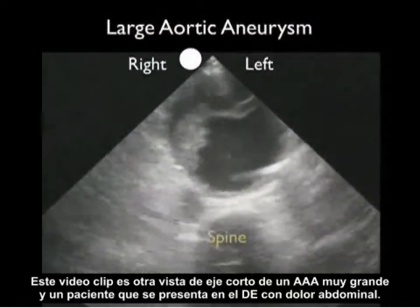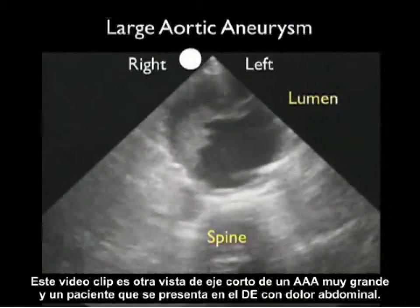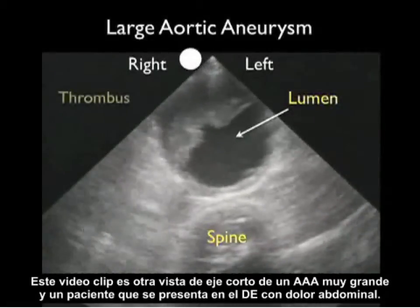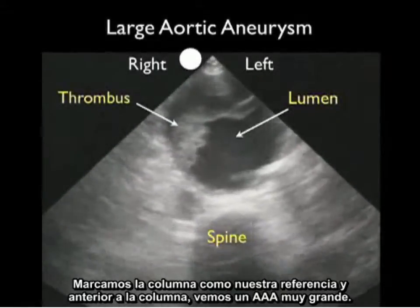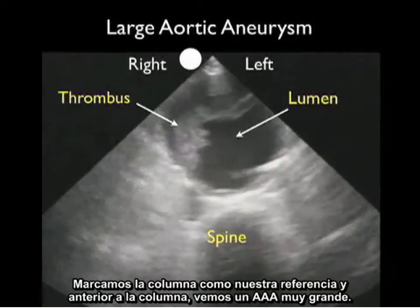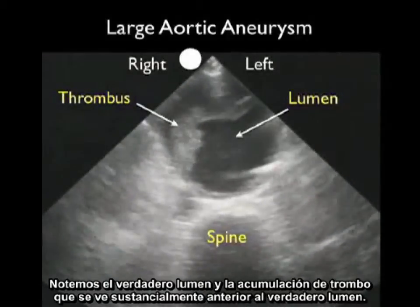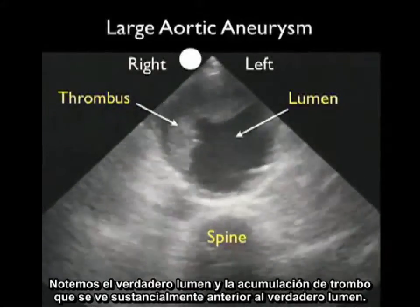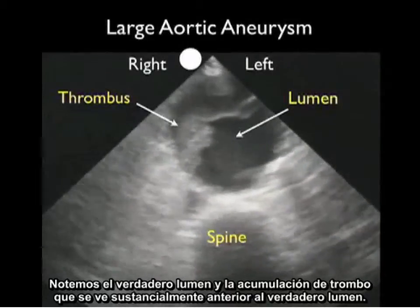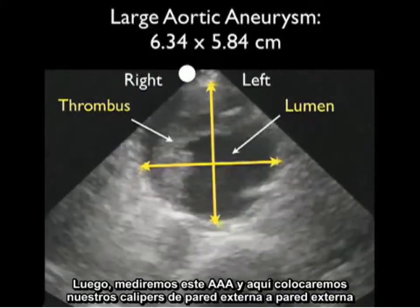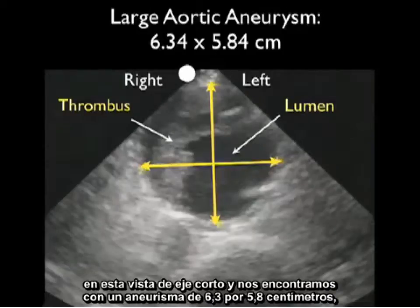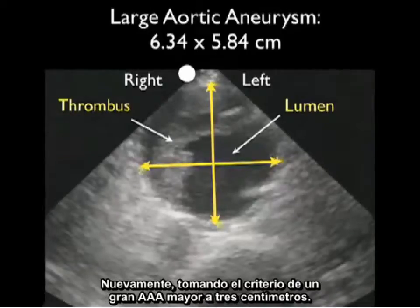This video clip shows another short axis orientation of a large AAA in a patient presenting to the ED with abdominal pain. With the spine marked as our landmark, we see a very large AAA anterior to the spine with a true lumen and substantial accumulation of thrombus anteriorly. Placing calipers from outer wall to outer wall in short axis configuration gives a measurement of 6.3 by 5.8 centimeters, meeting the criteria of a large AAA greater than 3 centimeters.